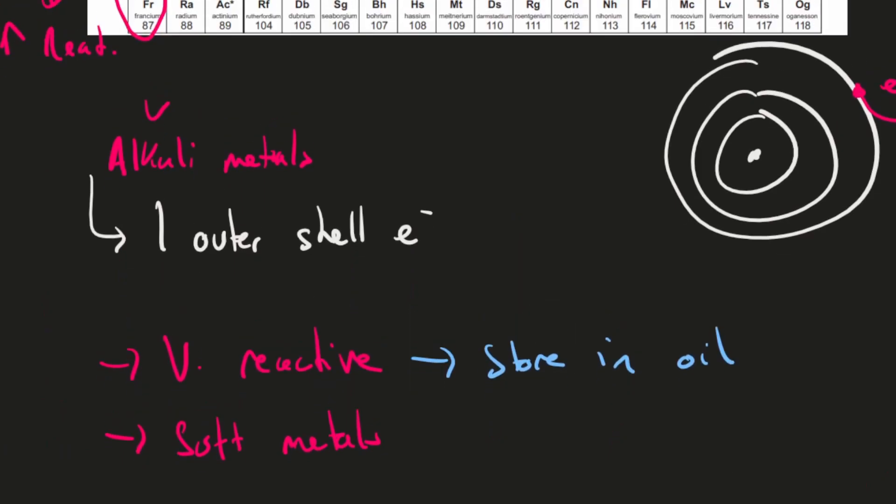We do need to know a couple of common properties that all Group 1 atoms have. They're all very reactive and they are all soft metals, so you can actually cut all of these with a knife. Because they're so reactive, we tend to store them in oil to stop them from reacting with water and oxygen in the air.